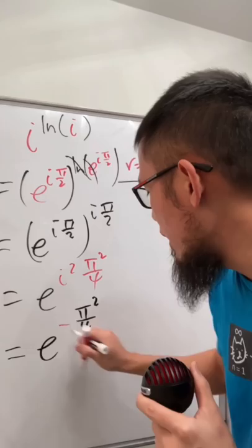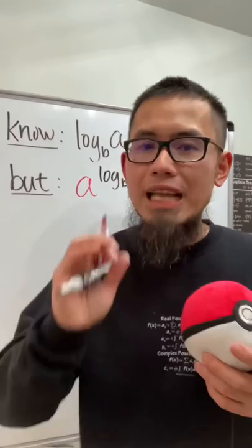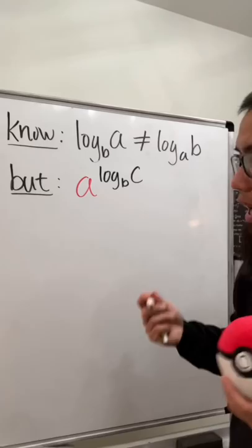This result is real — very cool! Now, when we have log base b of a, this is unfortunately not the same as log base a of b. But let me show you a log property that has a similar flavor: when we have a^(log_b(c)), we can actually switch a and c and that's legitimate.